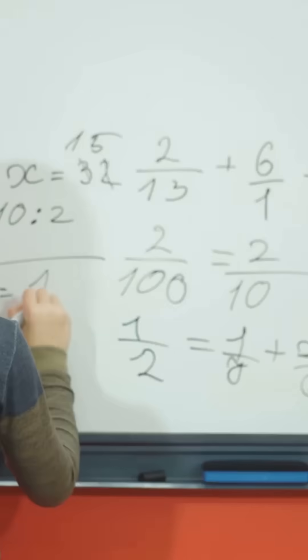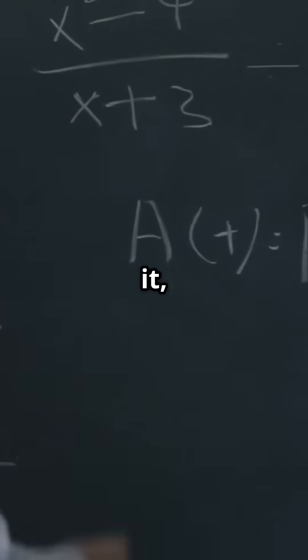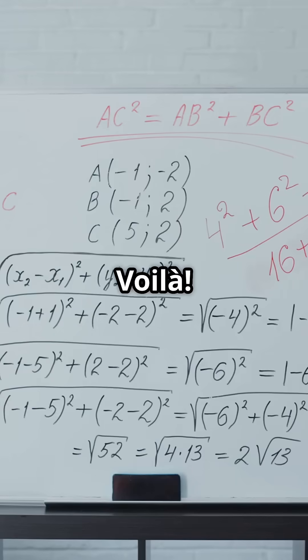Now here's the magic. Take half of b over a, square it, and add it to both sides. Voila, you've turned it into a perfect square trinomial.